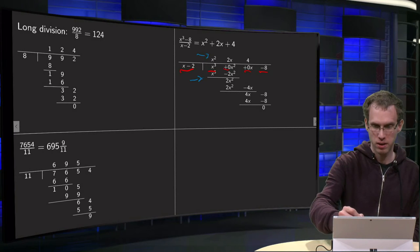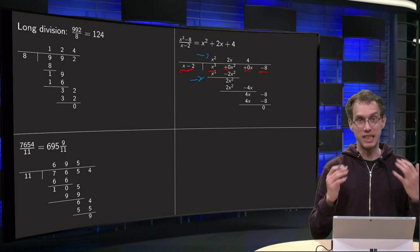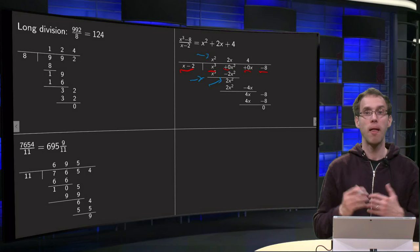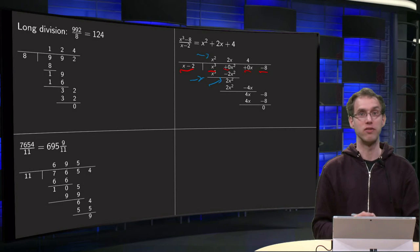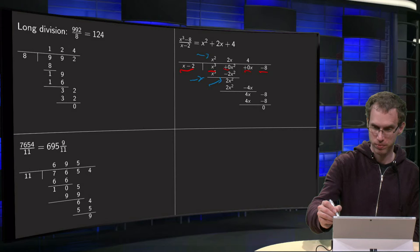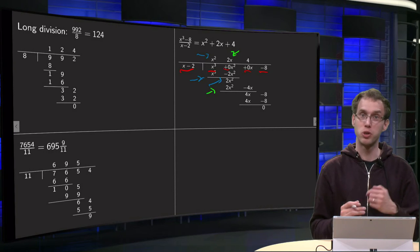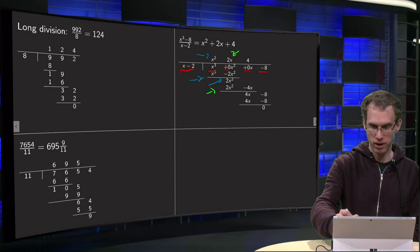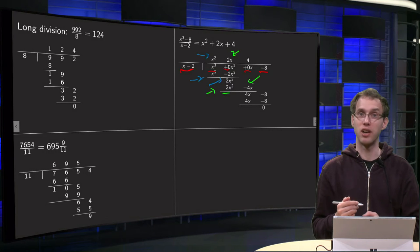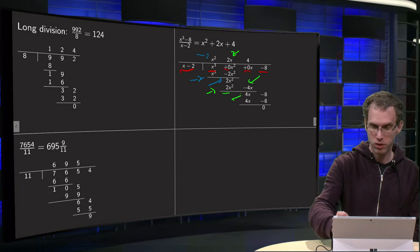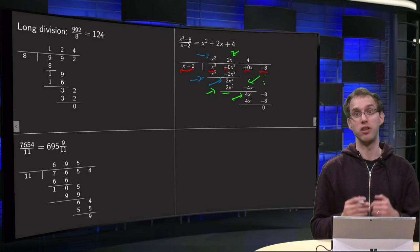Then you subtract: x³ minus x³ equals 0 — that was exactly the idea — and 0·x² minus (−2x²) equals 2x². Then we continue: how many times can I fit x minus 2 into 2x²? I can do it 2x times. So we put 2x over here, and 2x times (x minus 2) equals 2x² minus 4x. The 2x² terms cancel out, and subtracting 0·x minus (−4x) leaves 4x, and we still have minus 8. So we have 4x minus 8.